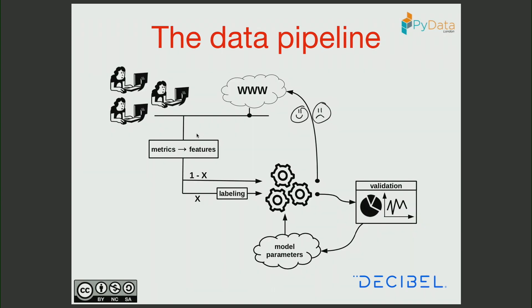This is the final pipeline. We collect metrics from the session of every user, obtain features, pass them to the model, and then report frustration or not back to the website. A small fraction of these sessions are labeled by us and used to train and validate the model. The labeled data is used to tune parameters that can be read online by the model in order to optimize it in terms of precision and accuracy.